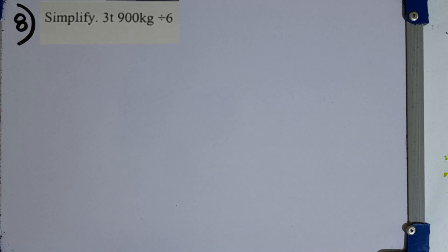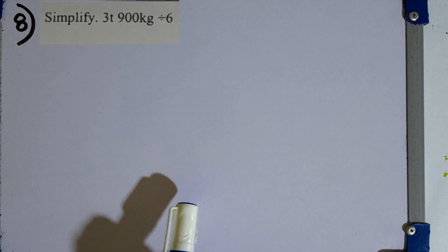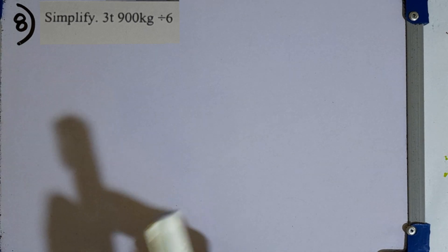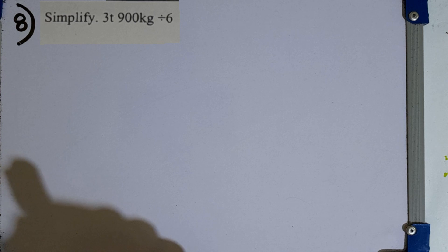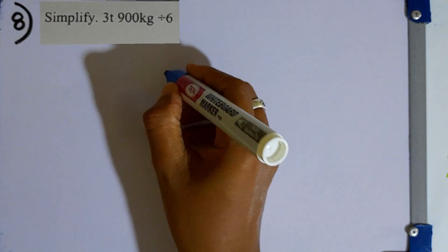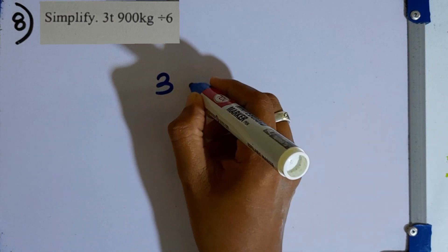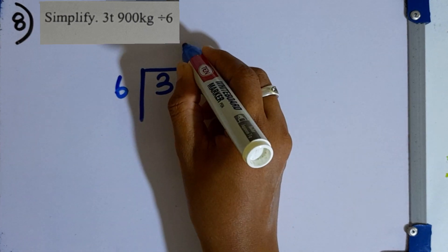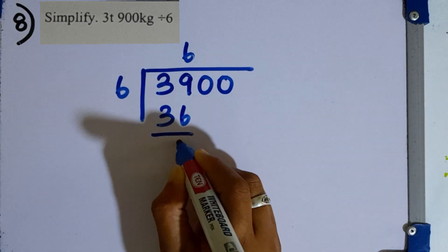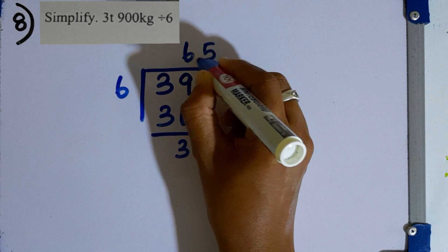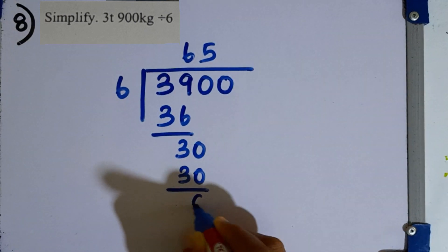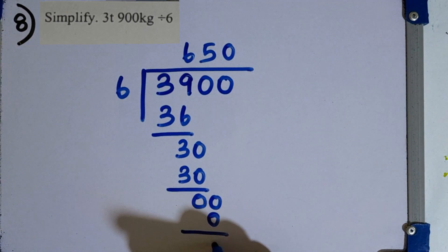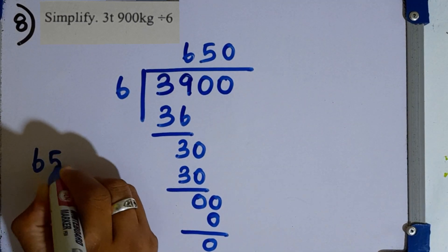Question number 8. Simplify 3 tons 900 kilograms divided by 6. First, convert to kilograms: that equals 3,900 kilograms. Then divide by 6: 3,900 kilograms divided by 6. Working through the division — 6 times 6 is 36, remainder 3; 6 times 5 is 30 — the final answer is 650 kilograms.